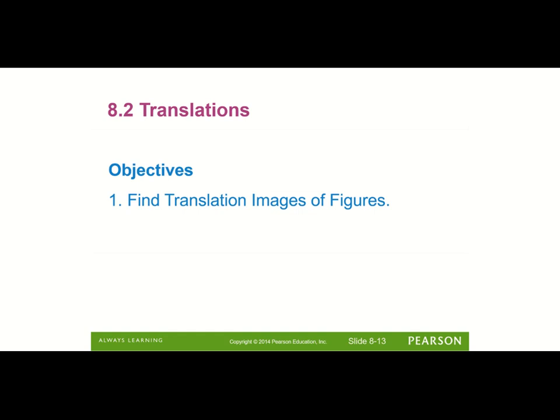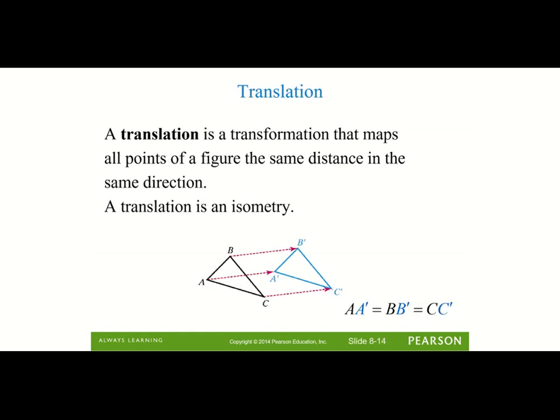Our next section is 8-2, and we're going to take a look at translations. A translation is a transformation that maps all points of a figure in the same distance and in the same direction. A translation is also what we talked about as a slide, and a translation is an isometry — a rigid transformation — so the shape will move but it doesn't change shape or size.